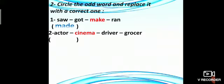Number 2. Actor, cinema, driver, and grocer. As you see, cinema is the odd one because it's a place, but actor, driver, and grocer are jobs, and we should replace it with any job, like vet.